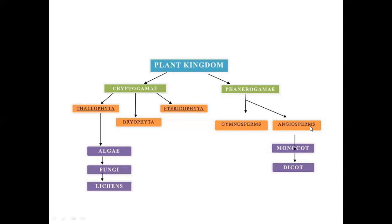Angiosperms are of two types: Monocots and Dicots. Monocots have a single cotyledon. Dicots have two cotyledons. Examples of monocots: rice, wheat, sugarcane. Dicots have two cotyledons — for example, mango is a dicotyledon.